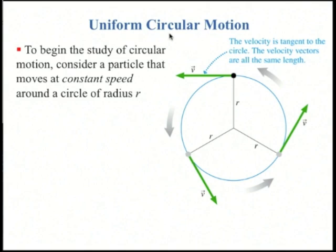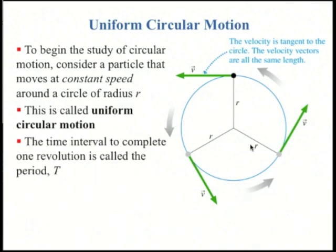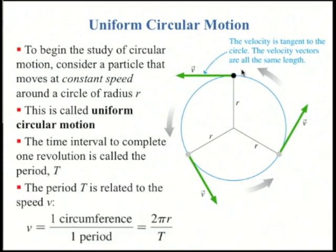A special case of circular motion is uniform circular motion, meaning that the speed is constant. The velocity vector is tangent to the circle and has the same length no matter what point on the circle you're at. If we wanted to compute the speed, we can wait for the object to go all the way around, measure that time — we call that the period T — and take the circumference divided by the time. So speed equals 2πr over T.